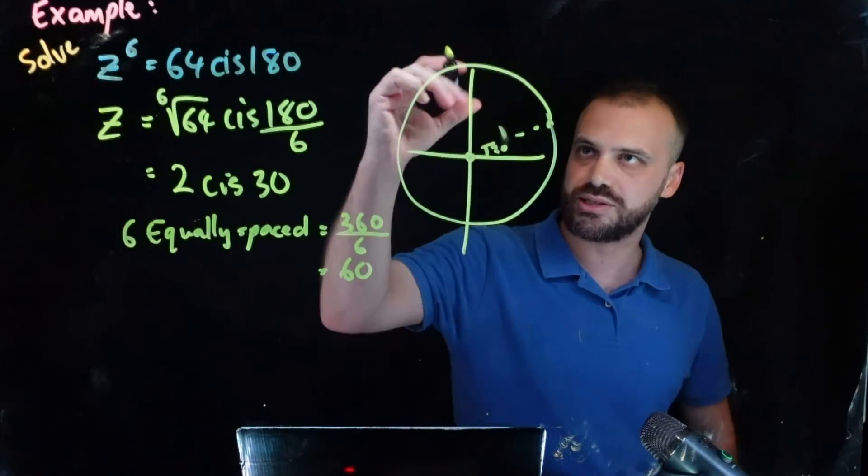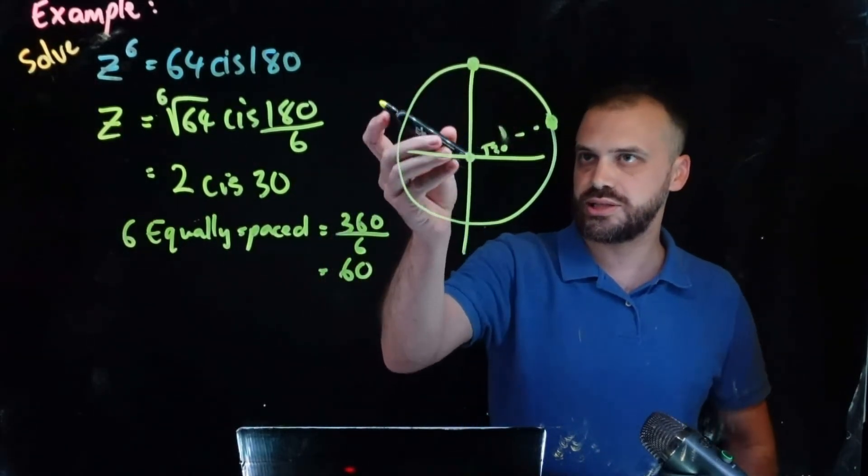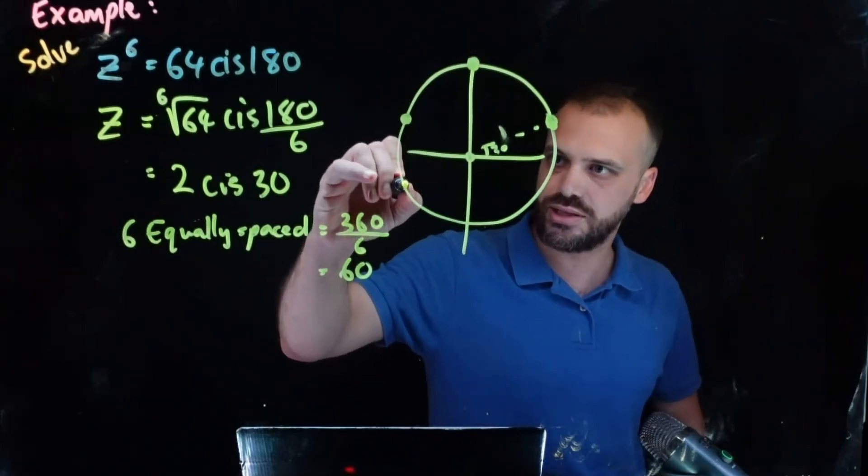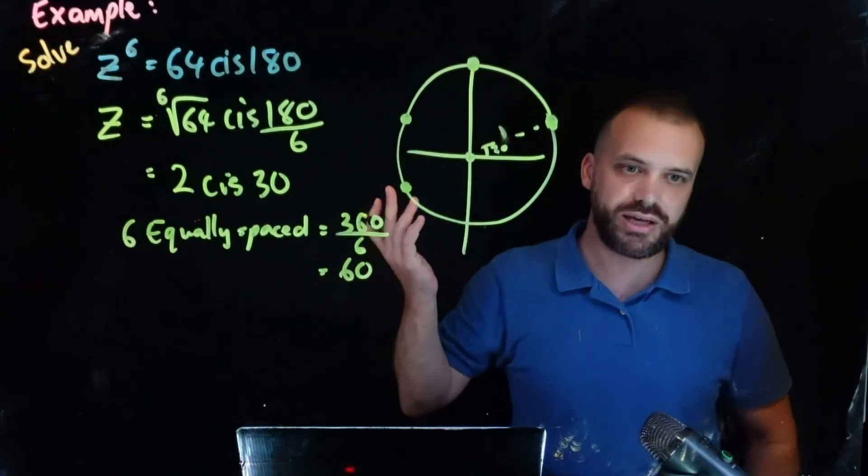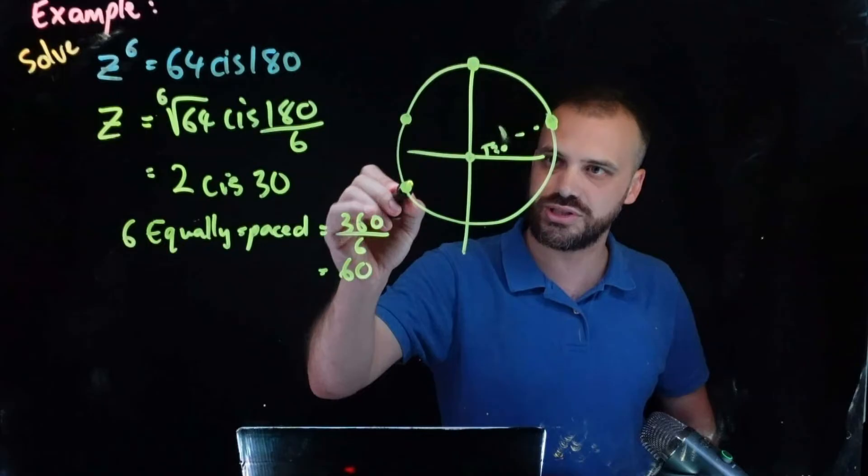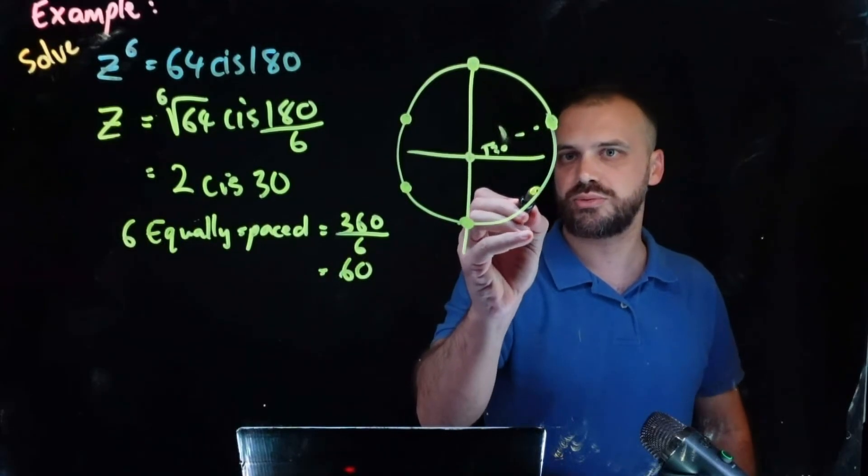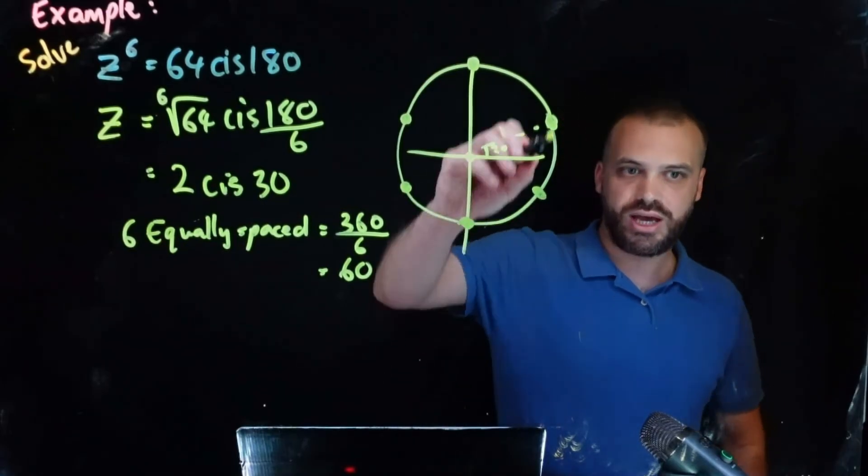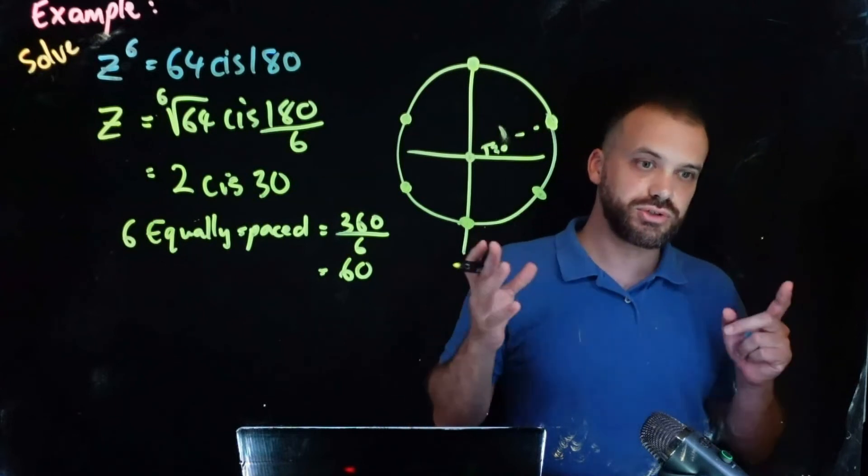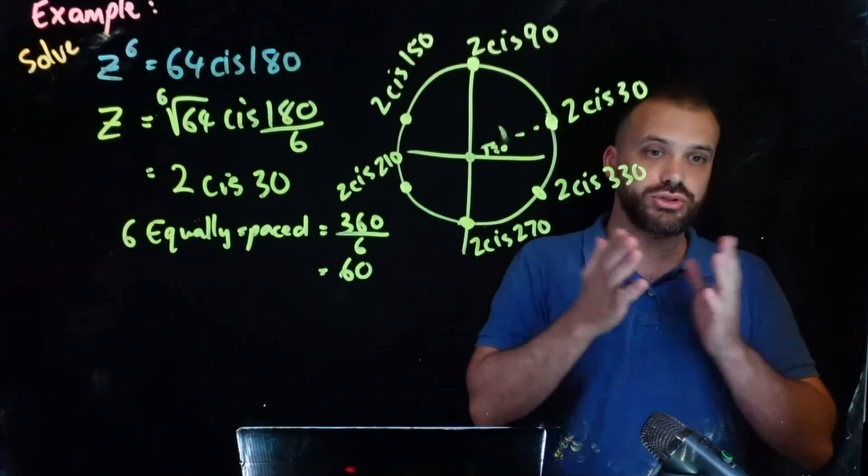So we have 30 degrees plus 60 is 90, plus 60 is 150, plus 60 is 180 degrees away from that so that's 210, plus 60 which is 270, plus 60 which is right here. We have six solutions and you should be able to easily write those solutions at least in polar form. Okay those are my six solutions.